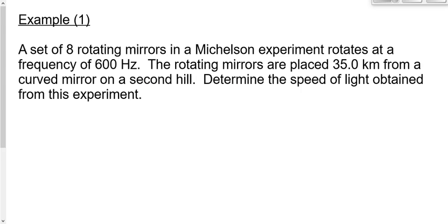Okay. All right, let's solve a problem involving this. Problem number one says a set of eight rotating mirrors in a Mickelson experiment. Now, sometimes we see questions where it's not eight sides. Sometimes you see questions where it's maybe 16 sides. Changes things ever so slightly, but the basic recipe that we use to solve this problem is the same. But do pay attention to how many sides of the mirror it is, because it is important. Rotates at a frequency of 600 hertz, which is pretty typical. The rotating mirrors are placed 35 kilometers from a curved mirror on a second hill, Mount San Antonio. Determine the speed of light obtained from this experiment.